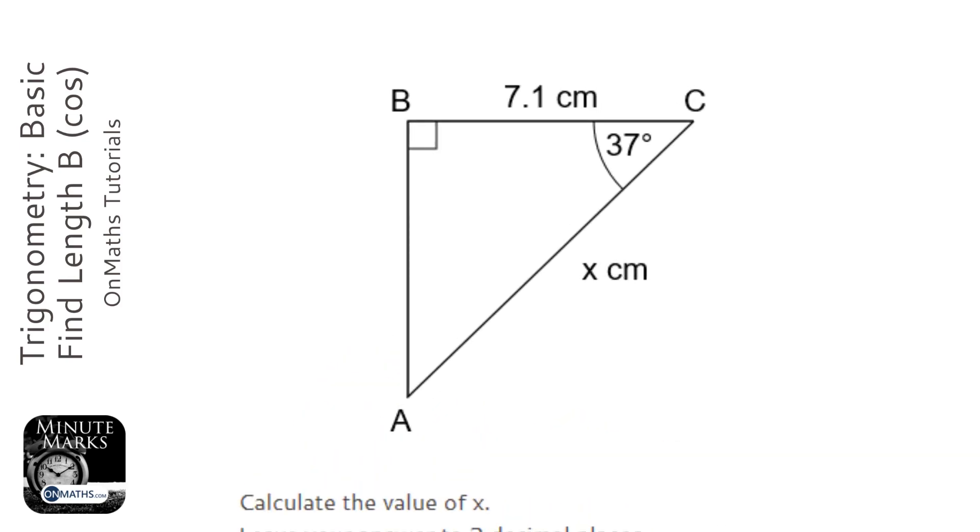OK, so this question is a right-angled triangle. We're asked to find a length, given a length and an angle, and that means we're going to be using trigonometry.